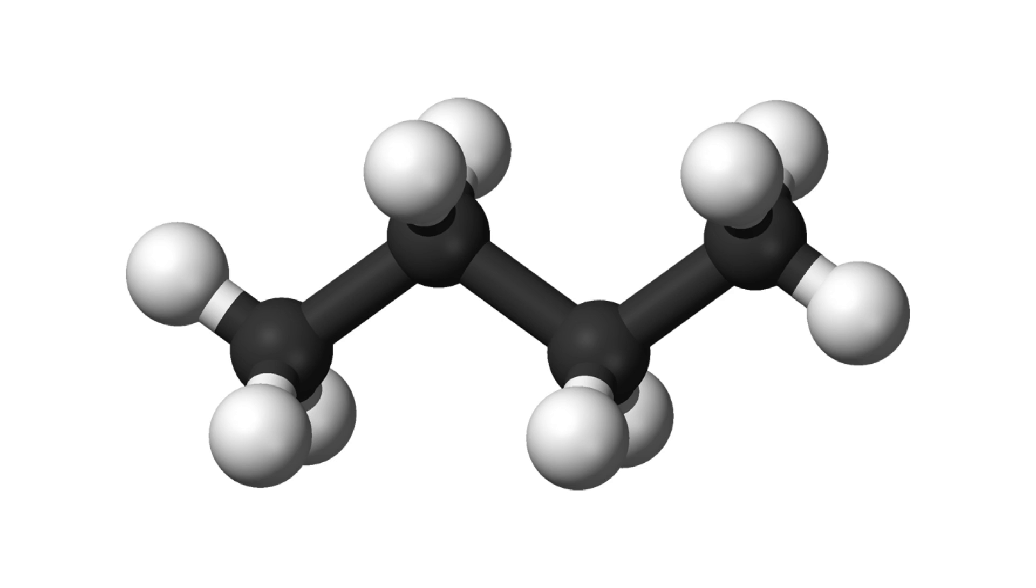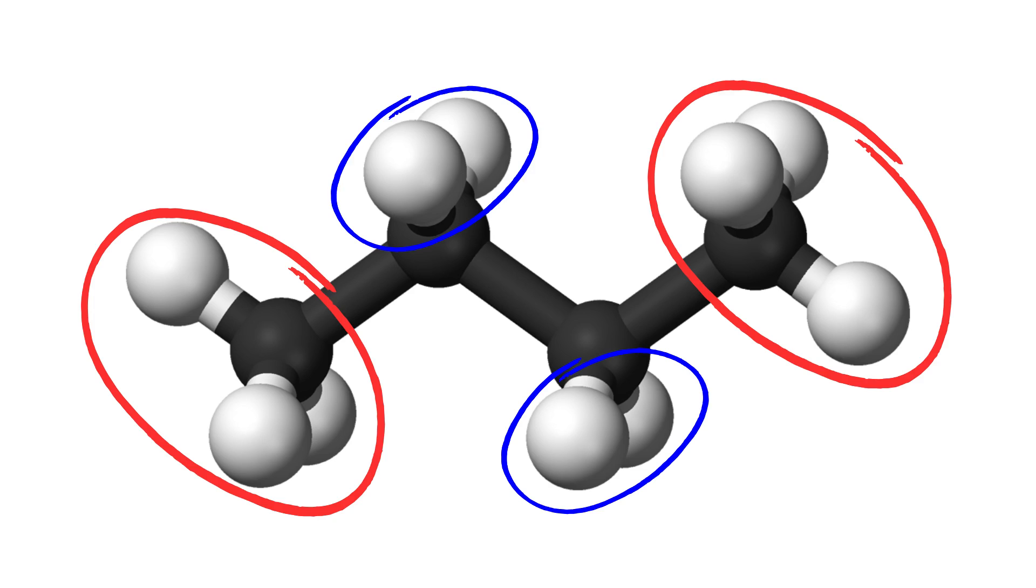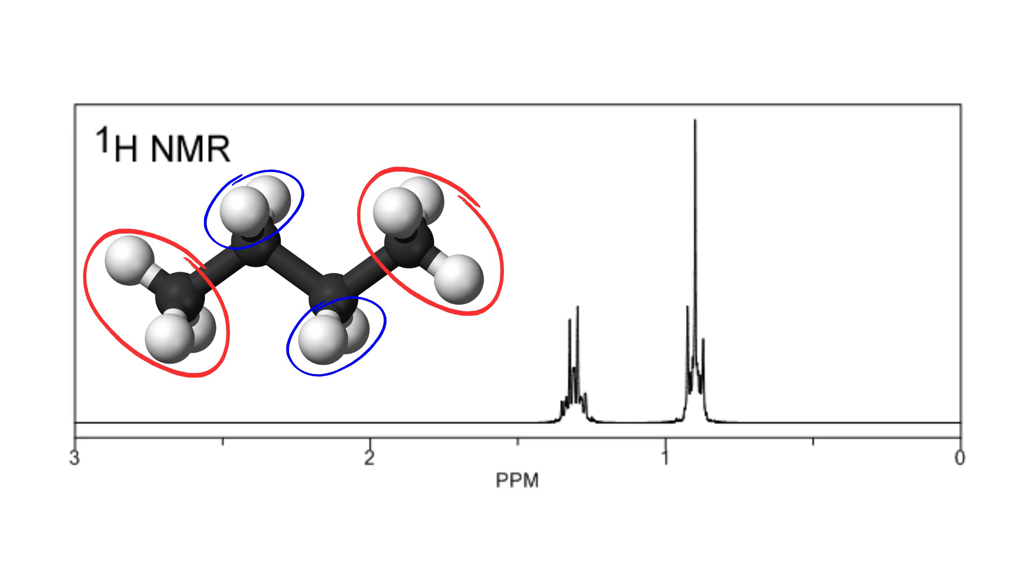Starting with butane, even though butane consists of four carbon atoms with surrounding hydrogen atoms, there are only two different chemical environments as far as the hydrogens are concerned. Therefore, we will only have two distinct NMR signals.